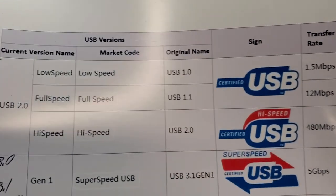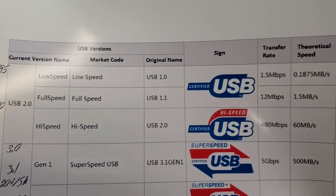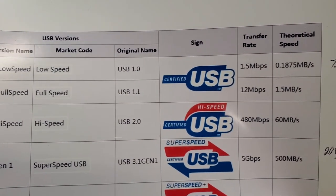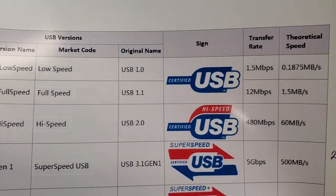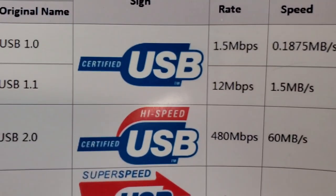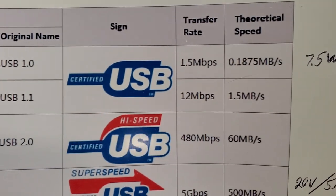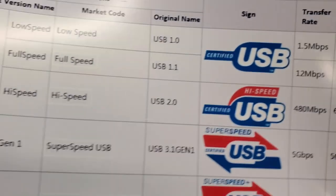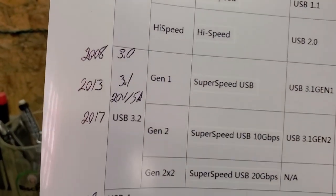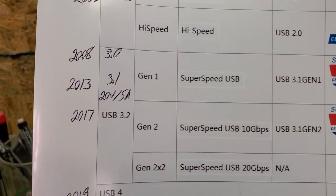Even though they made it faster, you can see USB 2.0 in year 2000 came up from 1.5 megabits per second to 12 megabits per second — astronomically fast at the time. And they got it all the way up to 480 megabits per second, with a theoretical top speed of 60 megabytes per second. I have not seen USB 2.0 ever go that fast.